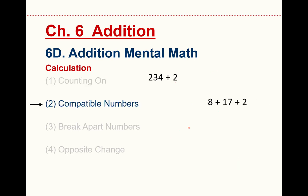Moving on. Number two, compatible numbers. Sometimes you have a list of numbers. This technique is good if you have three or more numbers together and you notice that a couple of the numbers add up to something nice and round like a multiple of 10. 8 plus 2 is 10, so I can add those first and then add the 17 and that's easy. That's 27.